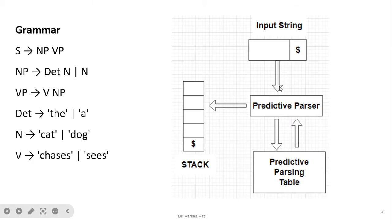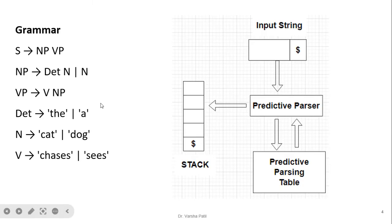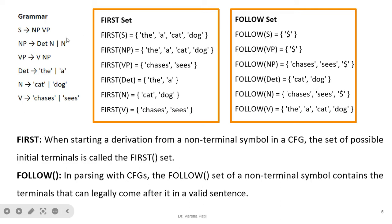Here is a simple grammar for the first example, which I have also explained in previous videos. First, we will calculate the first and follow sets for this grammar. To calculate First(S), since S gives NP, which is a non-terminal, we check what NP produces. NP gives determiner as well as N, so we check both: determiner gives 'the' and 'a', and N gives 'cat' and 'dog'.